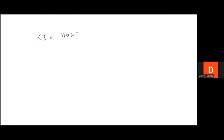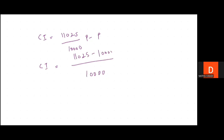Calculating: (105/100)² = 11025/10000. So Amount = 11025P/10000. Taking LCM, CI = (11025P − 10000P)/10000 = 1025P/10000.